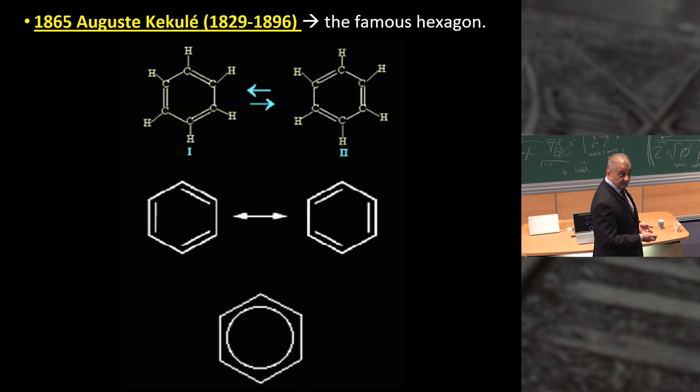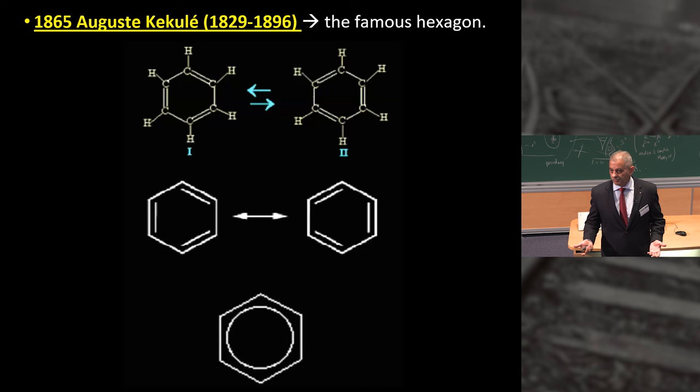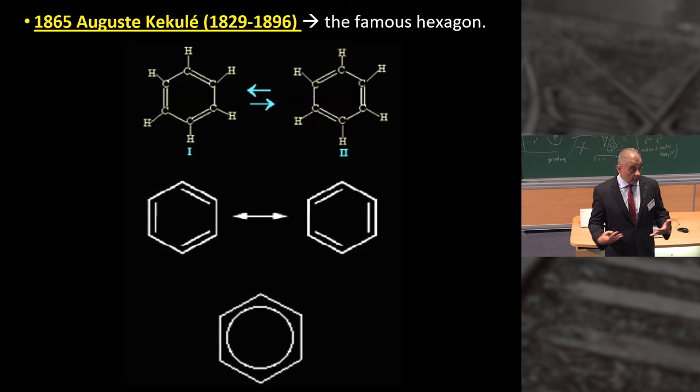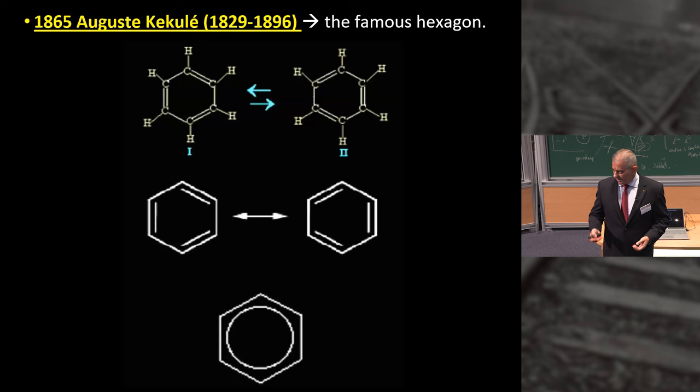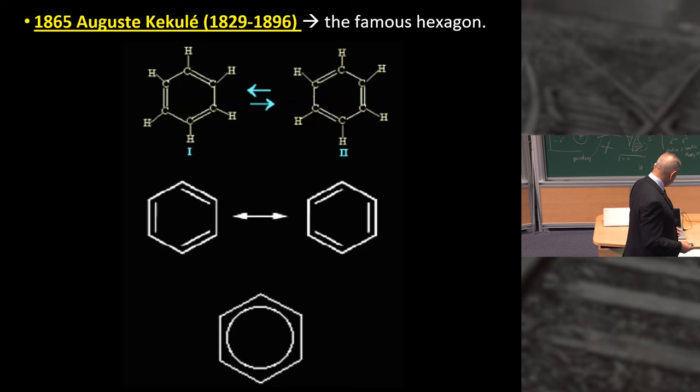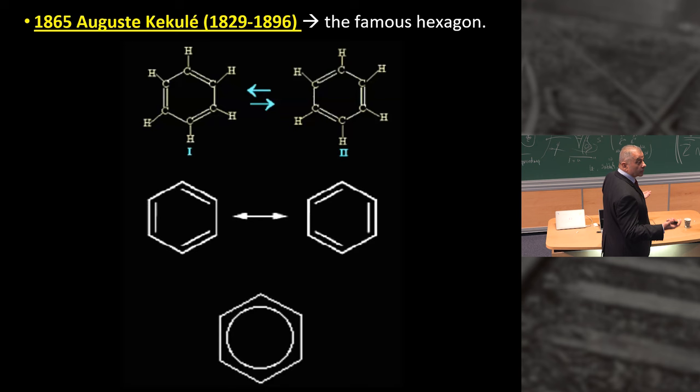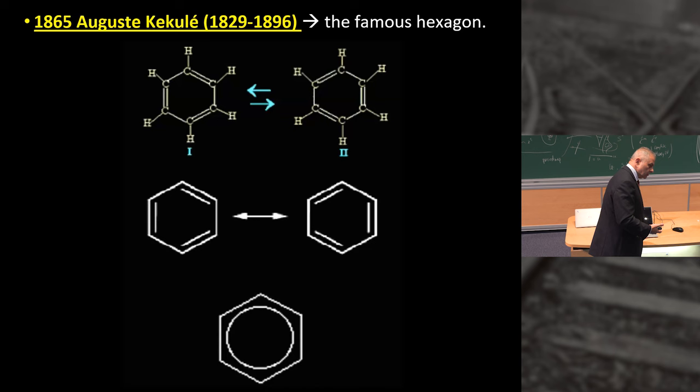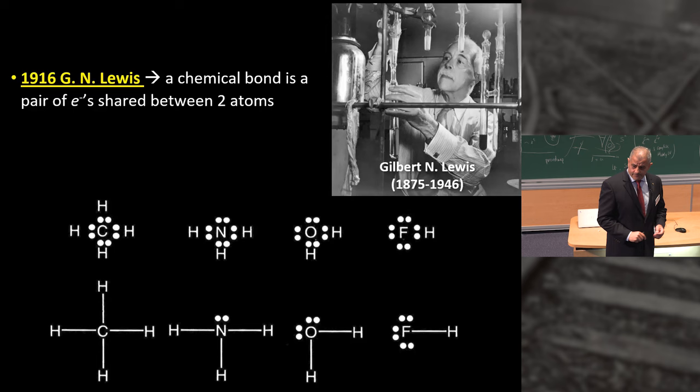So people like Kekulé and others started to represent chemical structures by graphs. In Kekulé's original paper, it didn't look like a hexagon. Later on, it was converted into the common hexagon that you probably all know, representing benzene, with all the atoms, the carbons, the hydrogens, and the dashes here represent the valence.